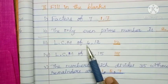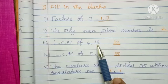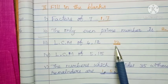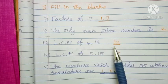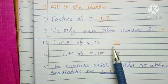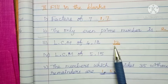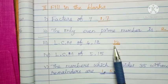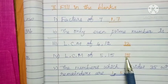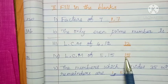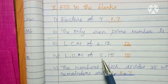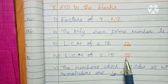LCM of 4 and 12: for 4 and 12, which one is the bigger number? That is the LCM. 12 is coming for 4 table and 12 table, so write the LCM as 12. Then 5 and 15: 15 is coming for the 15 table and the 5 table, so write the LCM as 15.